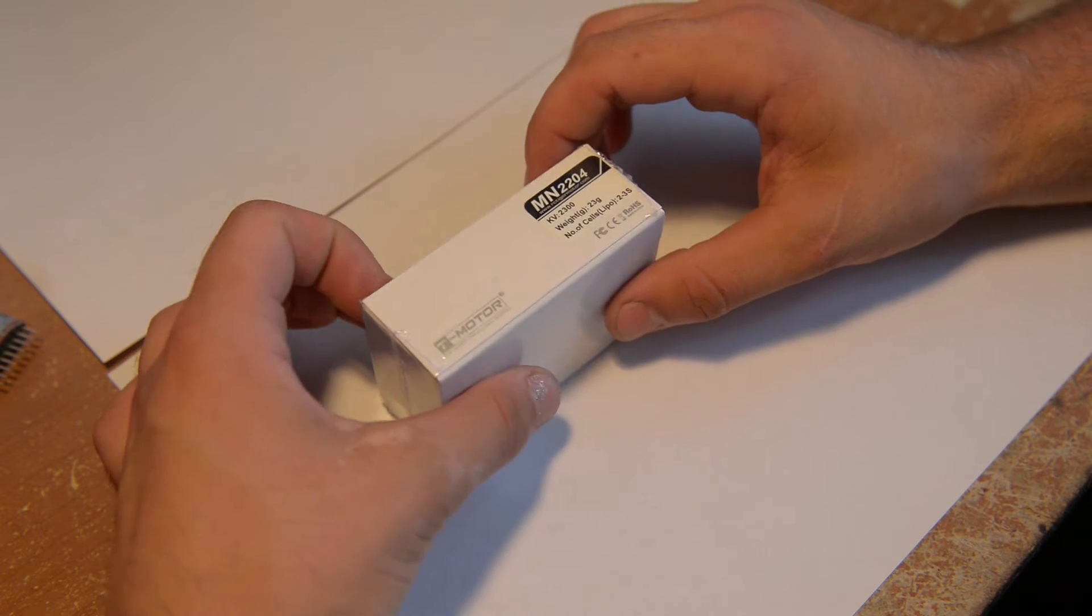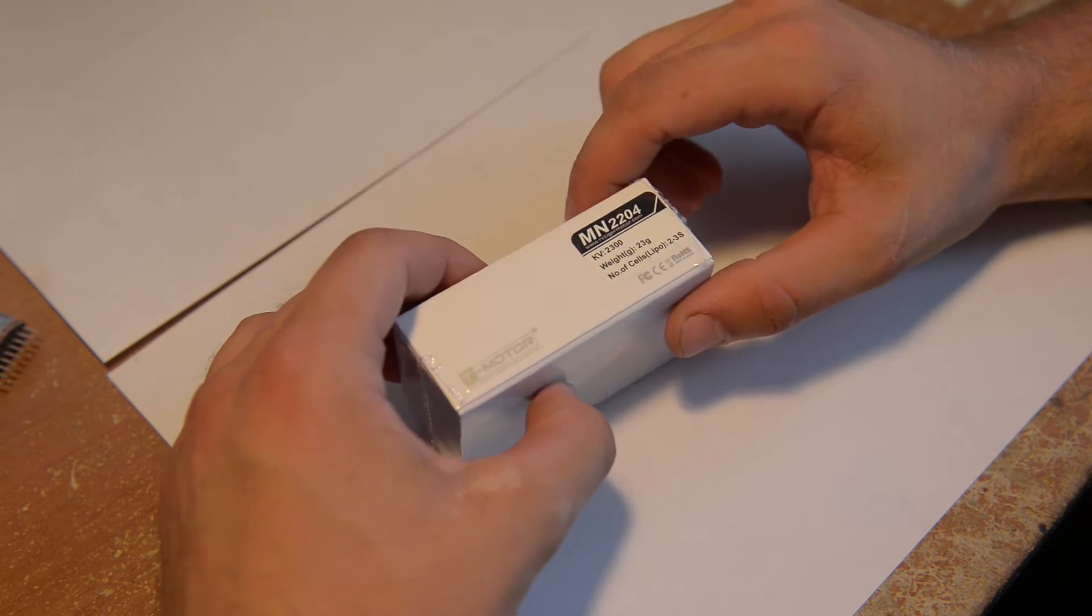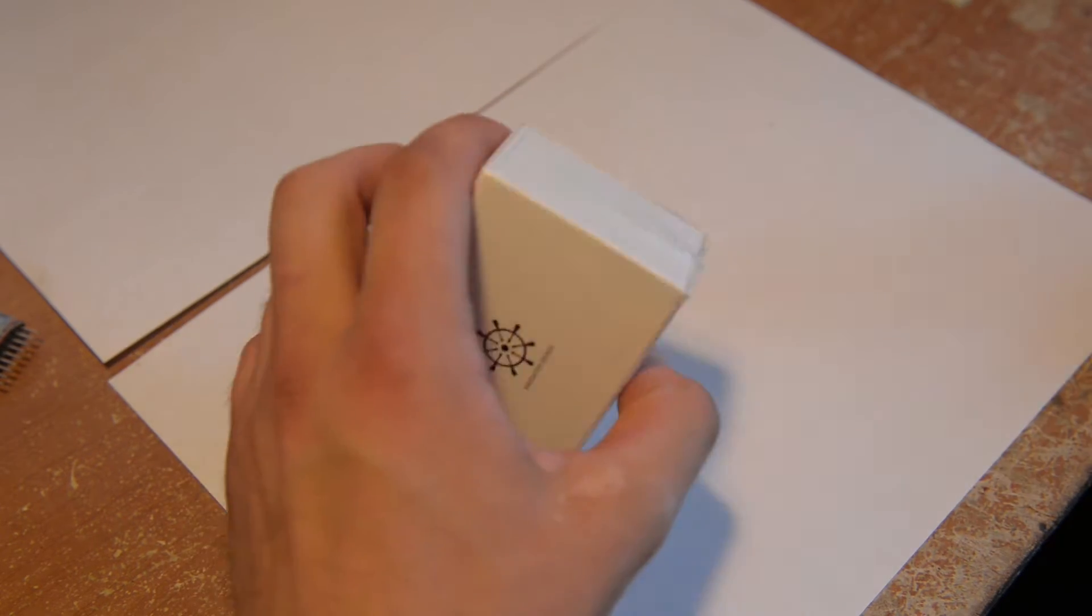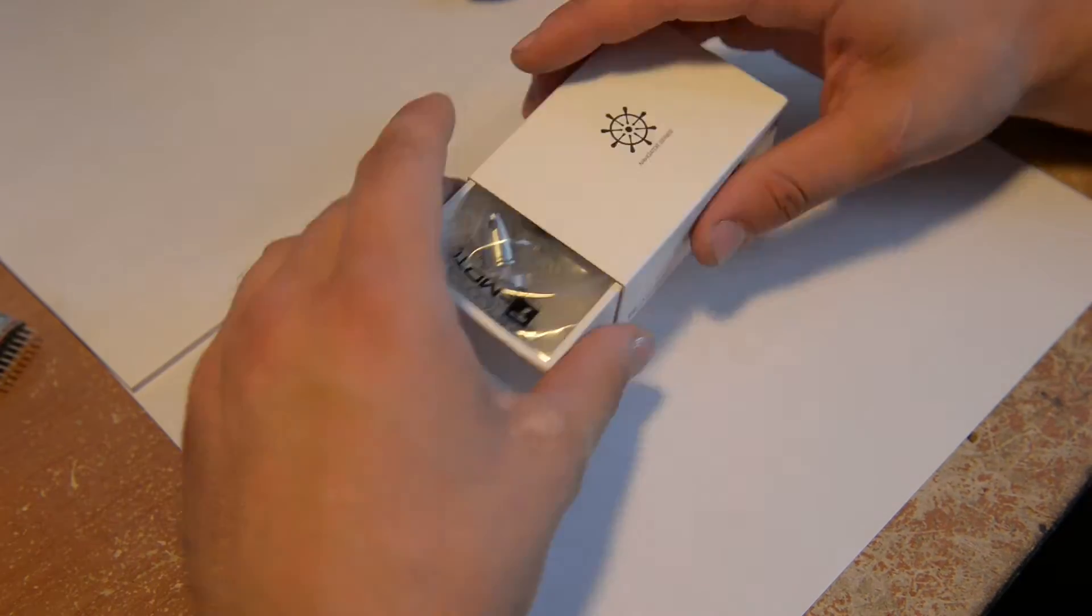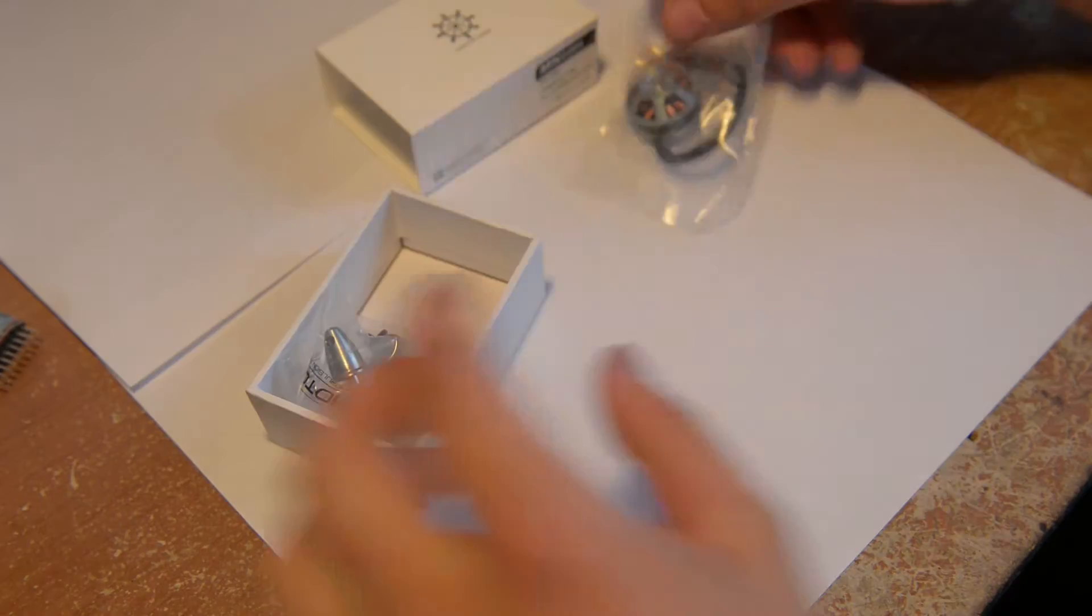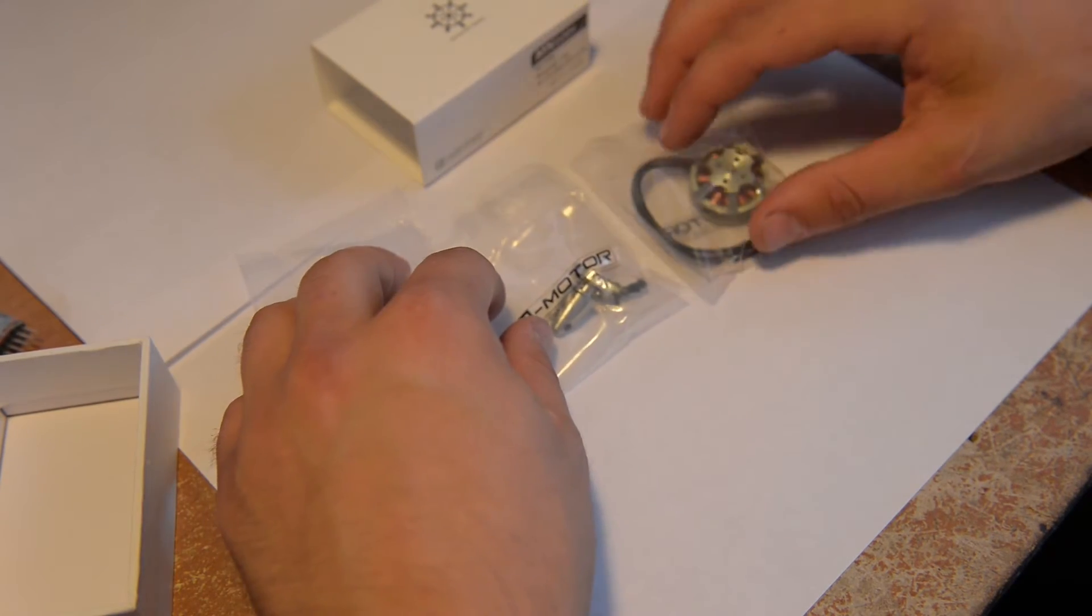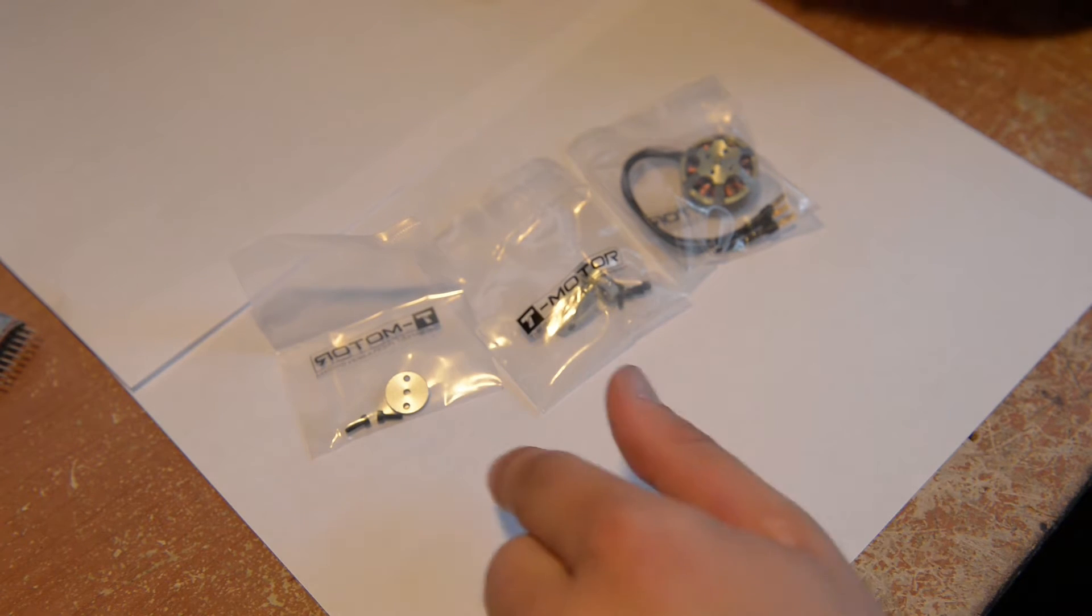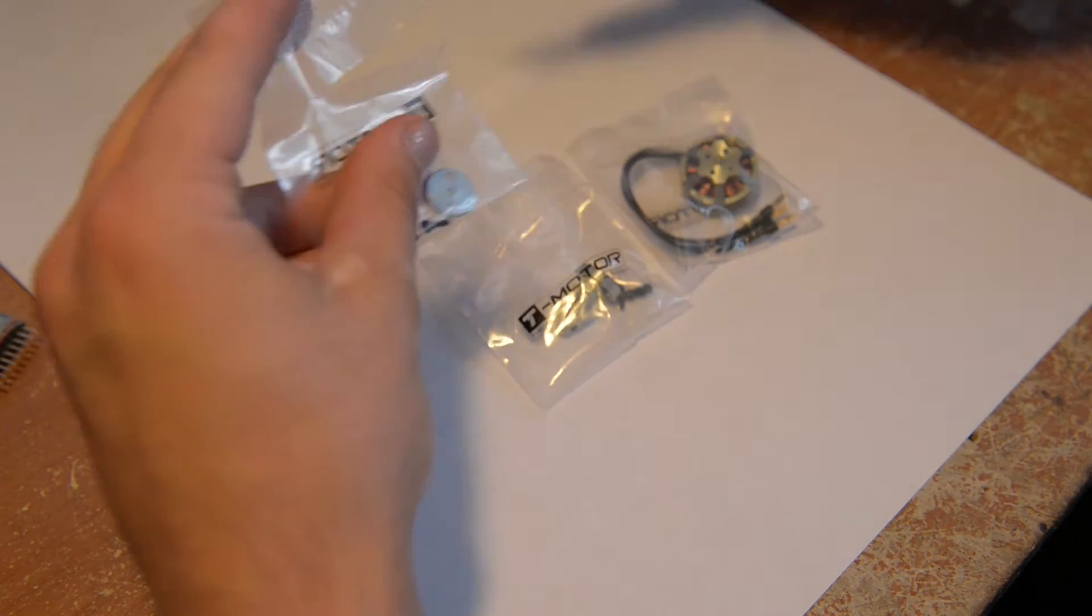I'm unboxing a new T-Motor 2204 2300KV motor. Here's what comes in the package: two different prop styles, the motor itself, and screws for it. So I'm going to open it real quickly.